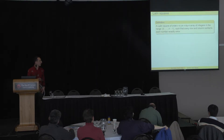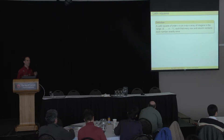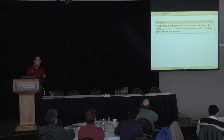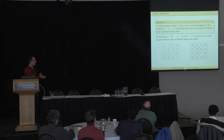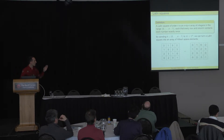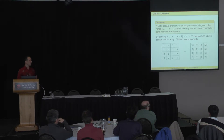A Latin Square, for those who have not come across these combinatorial objects, is an n-by-n grid. We have n symbols to put into this grid, and the rule is that on every row and every column we have to insert each symbol just once. So every row and every column is a permutation of these symbols. We have a 4×4 Latin Square here — you can see every number only appears once in every row and column. Latin Squares have been used extensively in quantum information for various constructions and protocols.